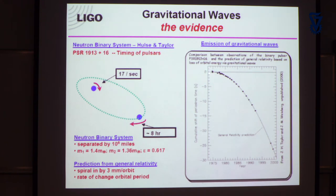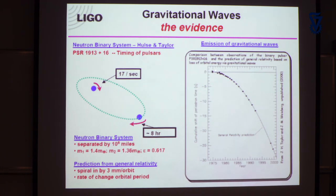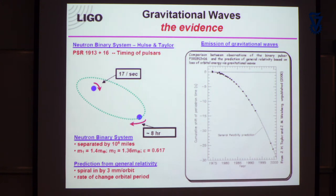Starting about 1973, what was measured was how long the orbit took — not the total number of orbits, but how the period was changing. The orbit was getting faster and faster, meaning the two objects were getting closer together and losing energy. The dots along the curve are the prediction from Einstein's theory for that particular loss of energy, and the line running through — which is not a fit but the actual prediction — matches perfectly. That was the very first indication of gravitational radiation.